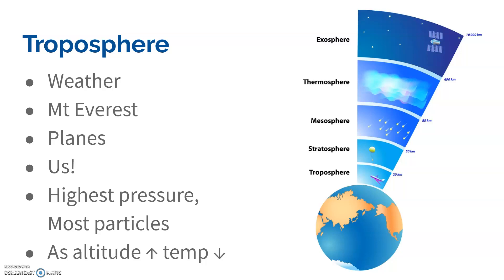The troposphere also has the highest pressure because of the most particles. Currently right now there's about 14 pounds per square inch being exerted on our bodies because of the air pressure. But we're just used to it because we have the same pressure of air in our lungs, and our bodies have adapted to this amount of pressure.